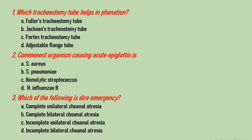The first question is: which tracheostomy tube helps phonation? Options are Fuller's tracheostomy tube, Jackson's tracheostomy tube, Portex tracheostomy tube, and adjustable flange tube. The correct answer is A, Fuller's tracheostomy tube, which has a hole in the neck or in the shaft. As the patient closes the Fuller's tracheostomy tube, the patient can breathe from the opening in the shaft, which leads to phonation.